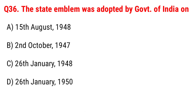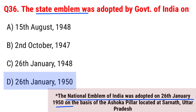Next question: the state emblem was adopted by the Government of India on Option A, 15 August 1948; B, 2 October 1947; C, 26 January 1948; D, 26 January 1950. The right answer is Option D, 26 January 1950. The national emblem of India was adopted on 26 January 1950 on the basis of the Ashoka pillar located at Sarnath, Uttar Pradesh.